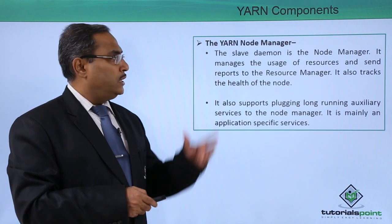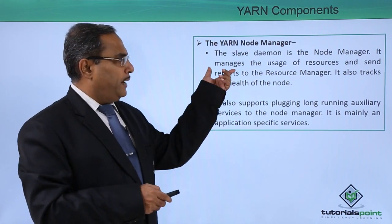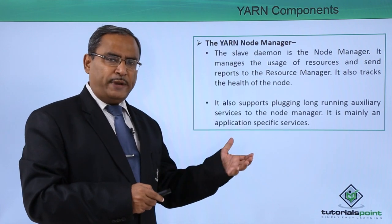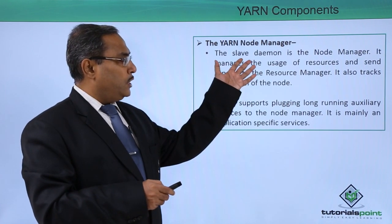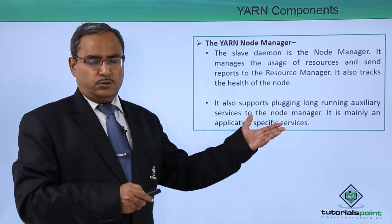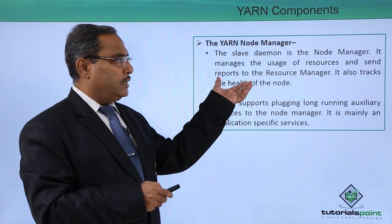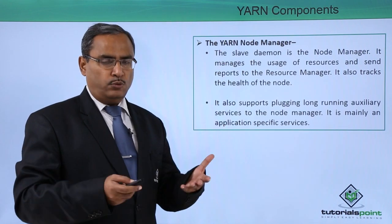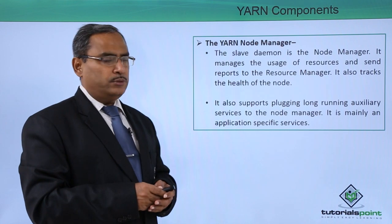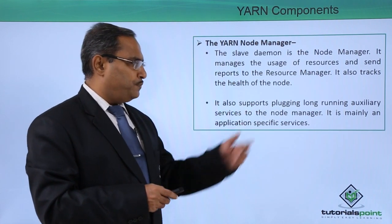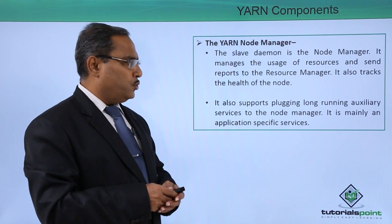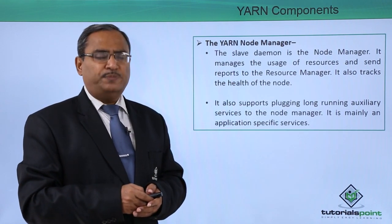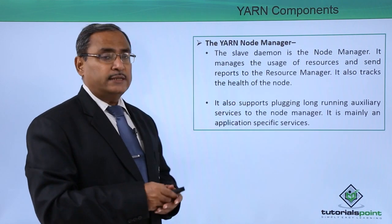The second component is the YARN node manager. The node manager is the slave daemon and it manages the usage of resources and sends reports to the resource manager. The resource manager is the master daemon and the node manager is the slave daemon, reporting resource usage to the master. It also tracks the health of the node and reports current node conditions to the resource manager. It supports plug-in long-running auxiliary services, which are application-specific services.